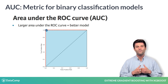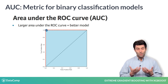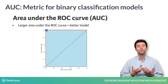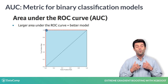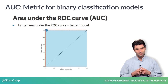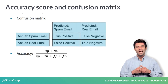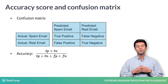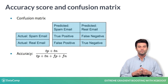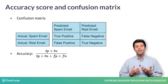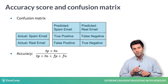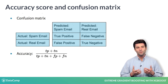So, a higher AUC means a more sensitive, better performing model. When dealing with multi-class classification problems, it is common to use the accuracy score — higher is better — and to look at the overall confusion matrix to evaluate the quality of a model. Some common algorithms for classification problems include logistic regression and decision trees.